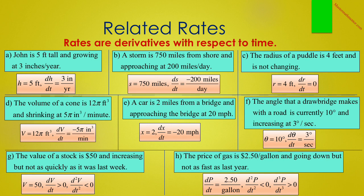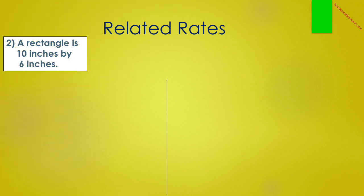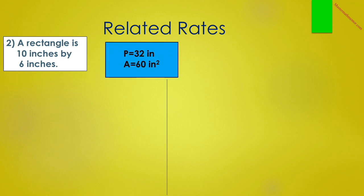If you don't fully understand the last two, don't be concerned yet. The goal of this is to show you how important it is to identify information that is given and write it in an equation with the proper variables and proper units. Suppose we were told that a rectangle is 10 inches by 6 inches. By geometry, we know the perimeter is 32 inches and the area is 60 square inches. But calculus is the study of change — let's suppose one or both dimensions of the rectangle are changing. How does that affect the perimeter and the area?